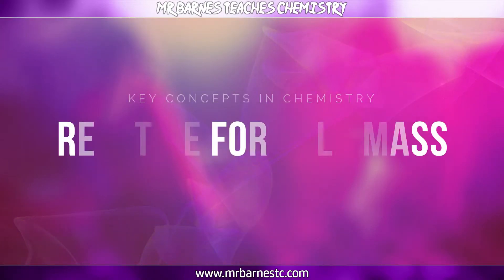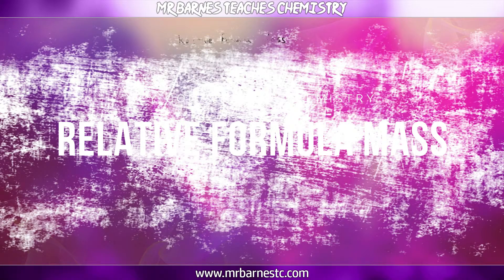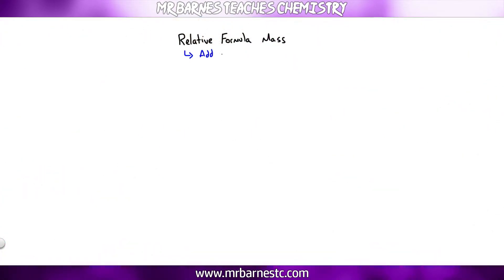We're going to start off with the easy one: relative formula mass. All you have to do is add up the atomic masses — they are the big number on your periodic table. The best way to go through this is to have a look at some practice examples.